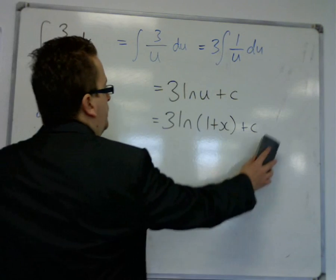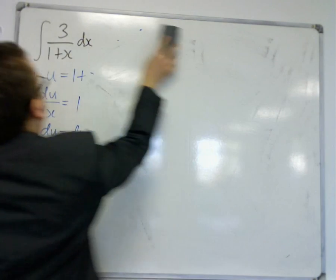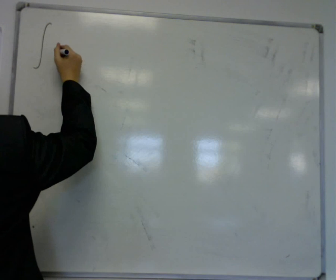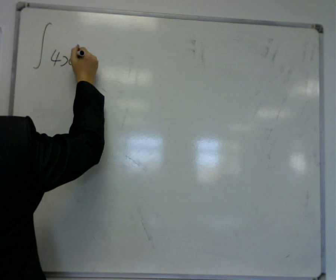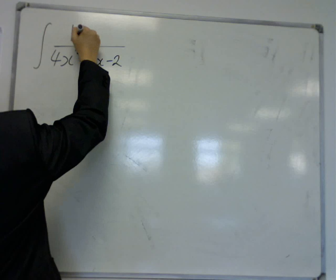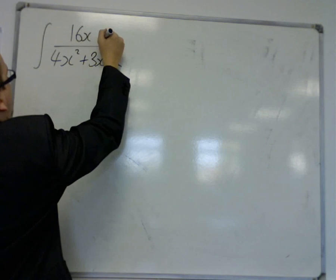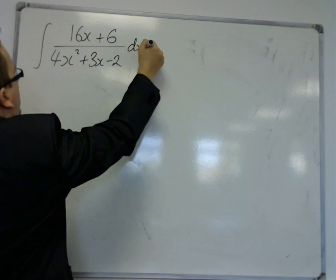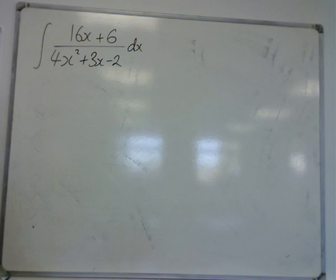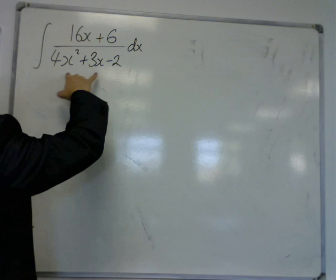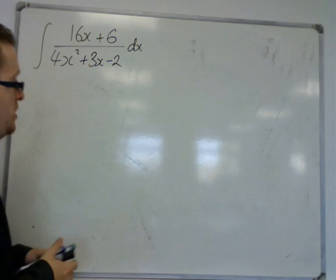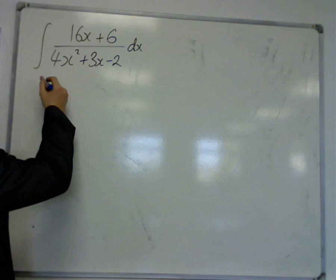Let's look at another example. Let's have the integral of 4x squared plus 3x minus 2, and we're going to have 16x plus 6 on the top dx. So, here's another integral that you could be asked to do. This is another log trick problem. Because if you look at the bottom, then that's 8x plus 3, which you will notice is 1 half of what's on the top of the fraction. So, using integration by substitution.